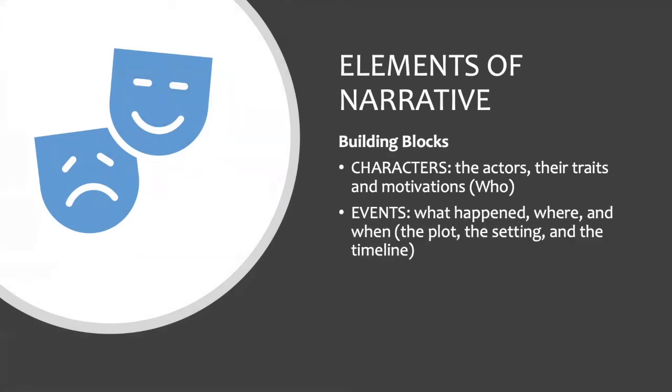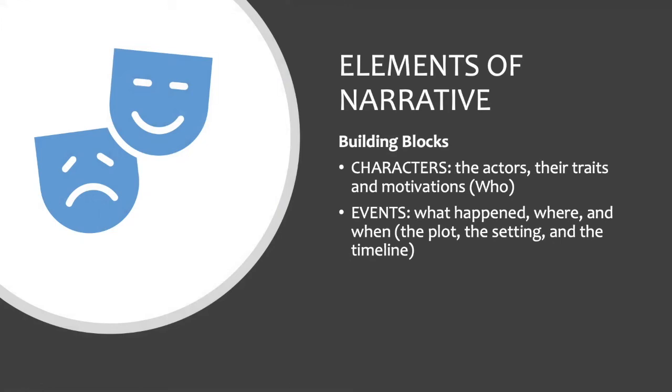Next are events — the what and the where. What happened? Where did it happen? What is the scene or the setting? What's the timeline? Third, rhetorical components such as causation — that's the why, the cause and effect between events. Cognitive science shows us people are wired for looking for cause and effect, so we need to explain it in our narrative.